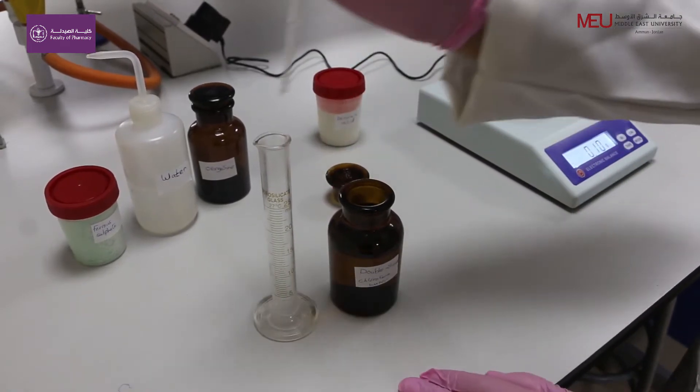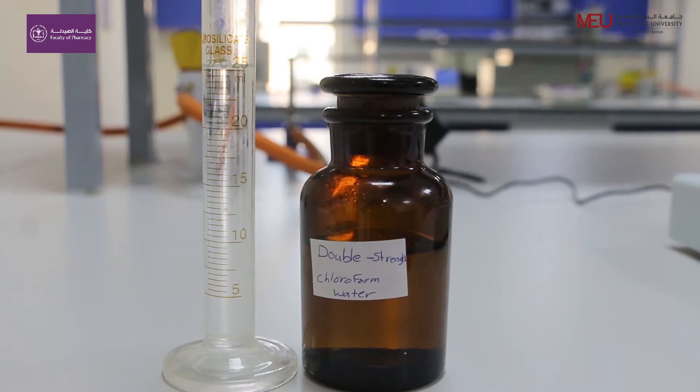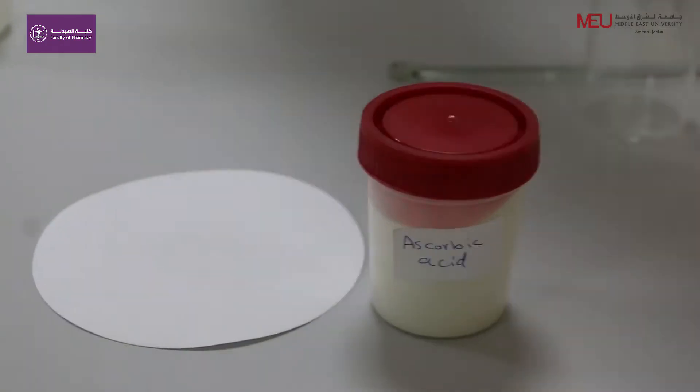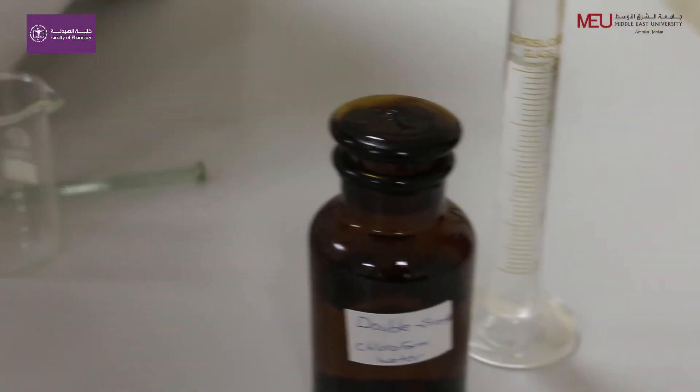Measure 25 ml of double strength chloroform water, which is used as preservative, flavoring agent, and as vehicle. Dissolve the ascorbic acid in the chloroform water.